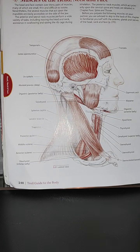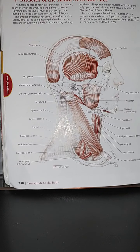Nevertheless, the several muscles that act upon the mandible are easily accessible on the side of the jaw. The anterior and lateral neck muscles perform a wide variety of tasks, including moving the head and neck, assistance in swallowing and raising the ribcage during inhalation.